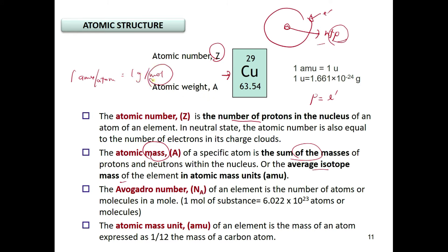One AMU per atom is equal to 1 gram per mole. When you have a number of elements equal to 6.022 × 10²³ atoms or molecules combined together, you have 1 mole of substance. For 1 mole of substance, based on Avogadro's number, you have 1 gram of material. The reference of the atomic mass unit is based on carbon, expressed as 1/12 the mass of a carbon atom, and 1 AMU is equal to 1.661 × 10⁻²⁴ grams — a very small mass, almost similar to that of a neutron or proton.